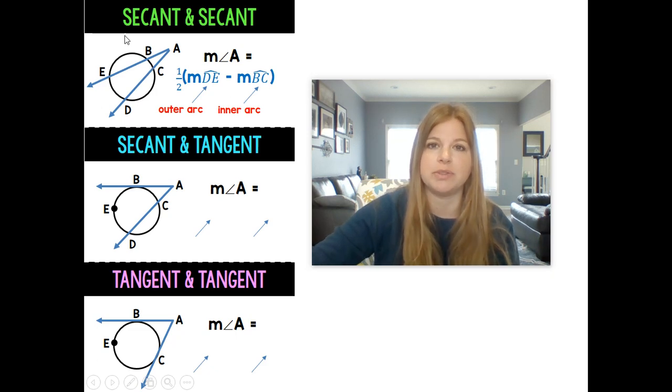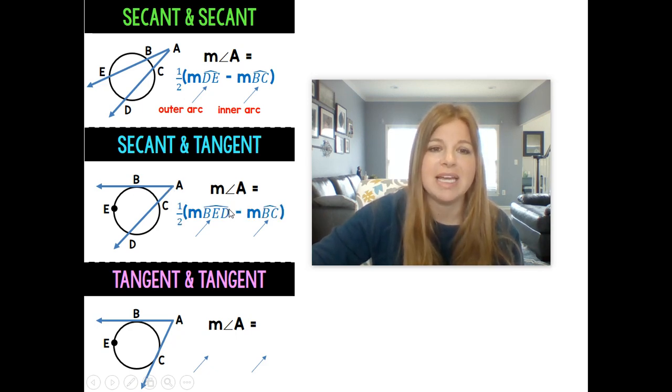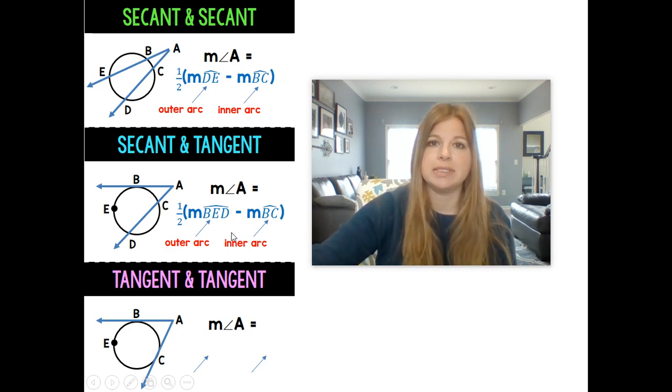Now if I have a secant and a tangent, they intersect out here. I've got angle A. It's basically the exact same thing. It's taking one half times the difference of arc BED, the outer arc, minus arc BC, the inner arc. So it's always one half times the outer arc minus the inner arc.